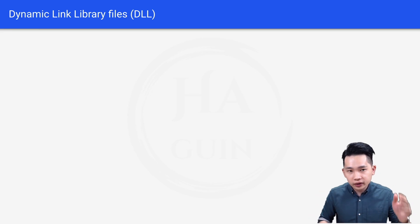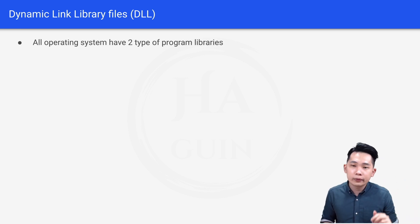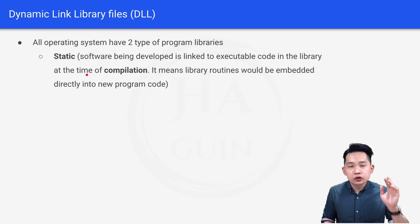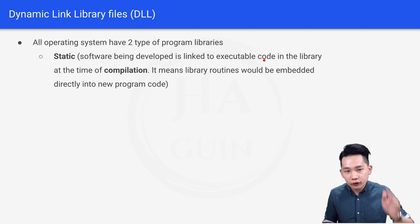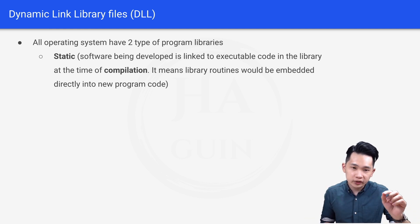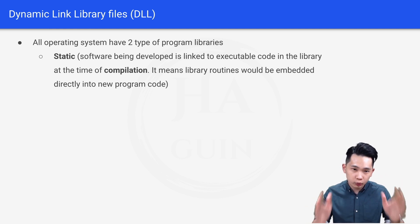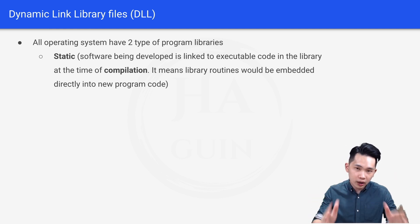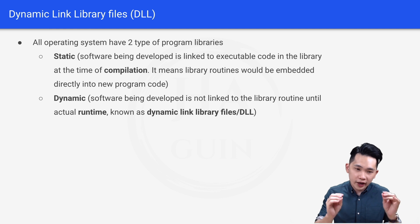Now let's look at dynamic link library files. In general, all operating systems have two types of program libraries. The first type is static, meaning the software being developed is linked to executable code in the library at the time of compilation — library routines are embedded directly into the new program code. The key phrase for static library is 'time of compilation'.